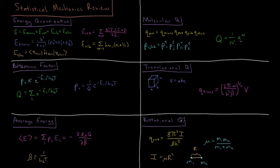The rotational partition function is eight pi squared times the moment of inertia divided by inverse temperature beta times Planck's constant squared. The moment of inertia for a diatomic molecule is the reduced mass mu times the bond length squared r. The reduced mass, for two atoms of mass m1 and m2, is m1 times m2 divided by m1 plus m2.